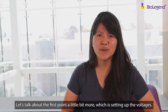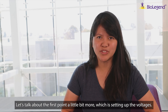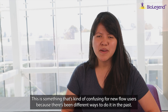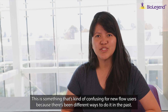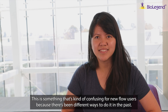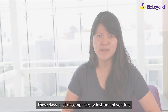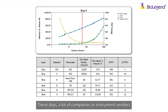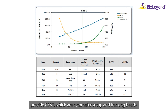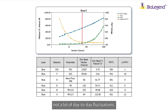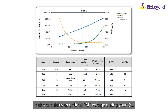Let's talk about the first point a little bit more, which is setting up the voltages. This is something that's kind of confusing for new flow users, because there have been different ways to do it in the past. These days, a lot of companies or instrument vendors provide CST — cytometer setup and tracking beads — to use for your instrument QC. This makes sure that there's not a lot of day-to-day fluctuations, and it also calculates an optimal PMT voltage during your QC.